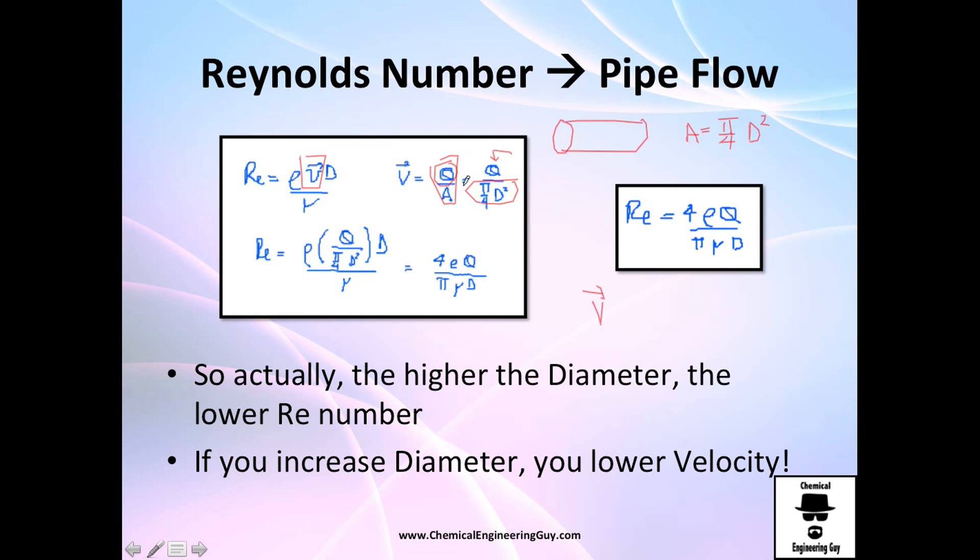Plug this value in the velocity in the Reynolds number. So density times velocity, which now is Q divided by π/4 times diameter squared, times this diameter and the viscosity. Arranging, calculating, and simplifying, you get this value, which is the Reynolds number when you're given volumetric flow rate instead of velocity.